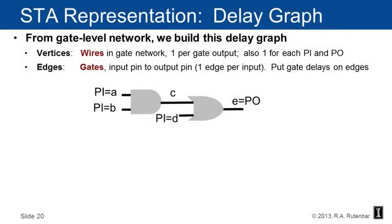Let's go build the graph and look at all of the ways we annotate it with arrival times, required arrival times, and slacks, and look at how we can use this to do detailed timing analysis. Let's start talking about how we actually represent a gate level logic network in a form where we can formulate the timing questions we'd like to answer. The basic representation for static timing analysis is something called a delay graph — you start with the gate network and build the graph.